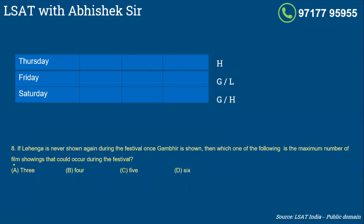Question number eight: if Lehenga is never shown again during the festival once Gambhir is shown - so basically if you've shown Gambhir once, you cannot show Lehenga after that. Then which one of the following is the maximum number of film showings that could occur during the festival? So I'll try to get six as this is the maximum answer. I'll put Lehenga here and Haseen here. Because once you use Gambhir, you cannot have Lehenga again. I'll use Lehenga here and Haseen here. Now I have to use Gambhir once. So I'll put Gambhir here and Lehenga here. I could get six.